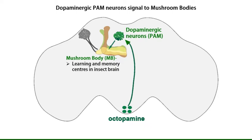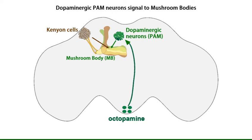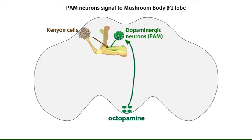Synaptic activity in the mushroom body has been studied primarily in the context of learning and memory. Mushroom body synapses consist of inputs from Kenyon cells, also referred to as the mushroom body intrinsic neurons. Our initial results suggested that flight-activated PAM neurons release dopamine for modulating synapses in the beta-prime-1 lobe of the mushroom body. This dopaminergic modulation helps maintain longer flight bouts.